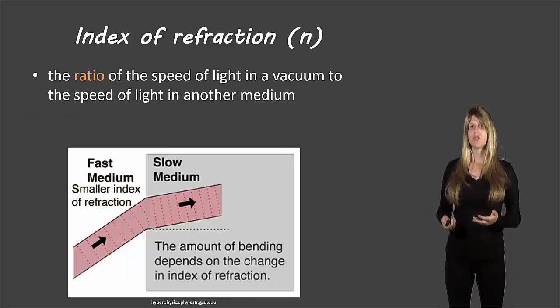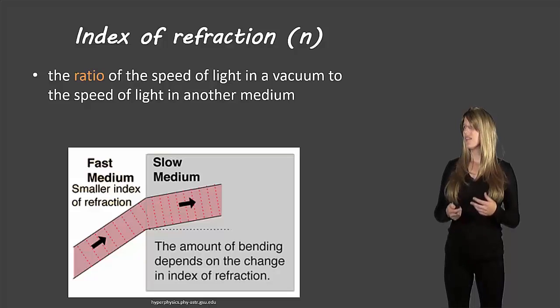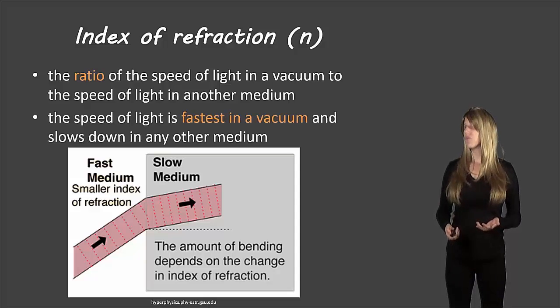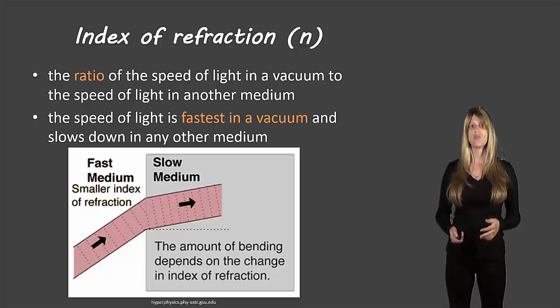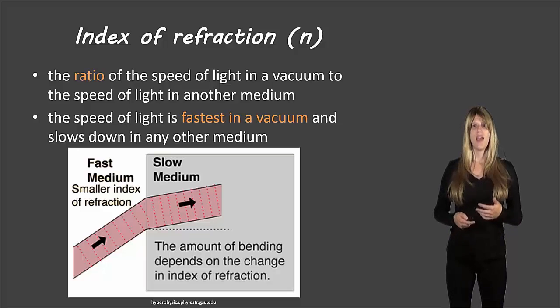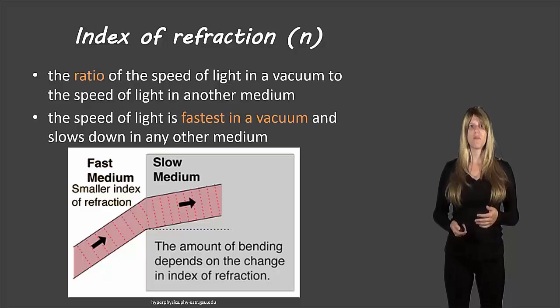So the final thing we'll look at here is the index of refraction. And that's given the letter N to stand for index of refraction. And this is the ratio of the speed of light in a vacuum compared to the speed of light in any other medium. And we mentioned already that the speed of light is fastest in a vacuum, and it will slow down in any other medium. So if we're looking at the speed of light in a vacuum, 3.00 times 10 to the 8 meters per second. And if we're looking at the speed of light in air, it will be a smaller number compared to that.